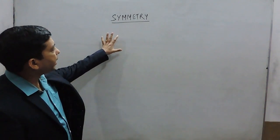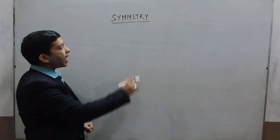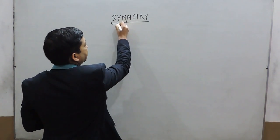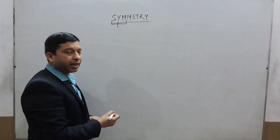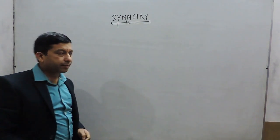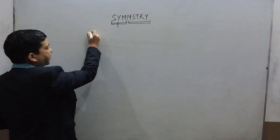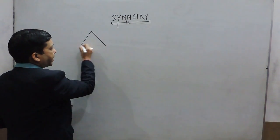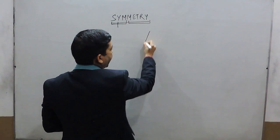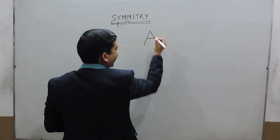Hello everyone, today we will discuss the topic of symmetry. The meaning of symmetry is: 'sym' means same and 'metry' means measurement. If we have a specific object like a triangle, or an alphabet like A, we can examine its symmetry.